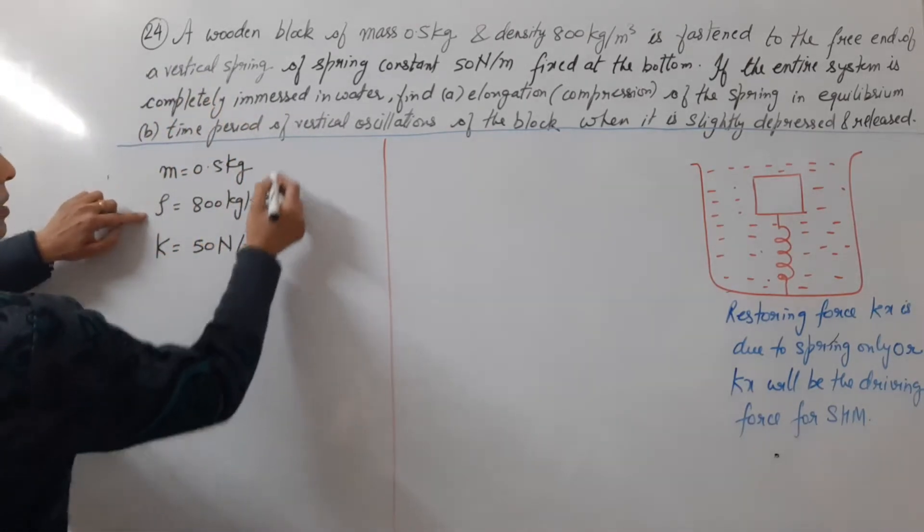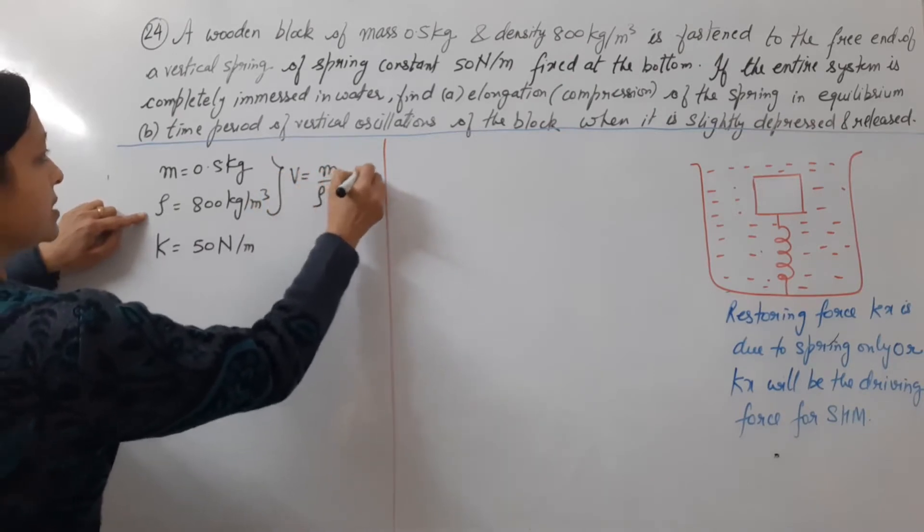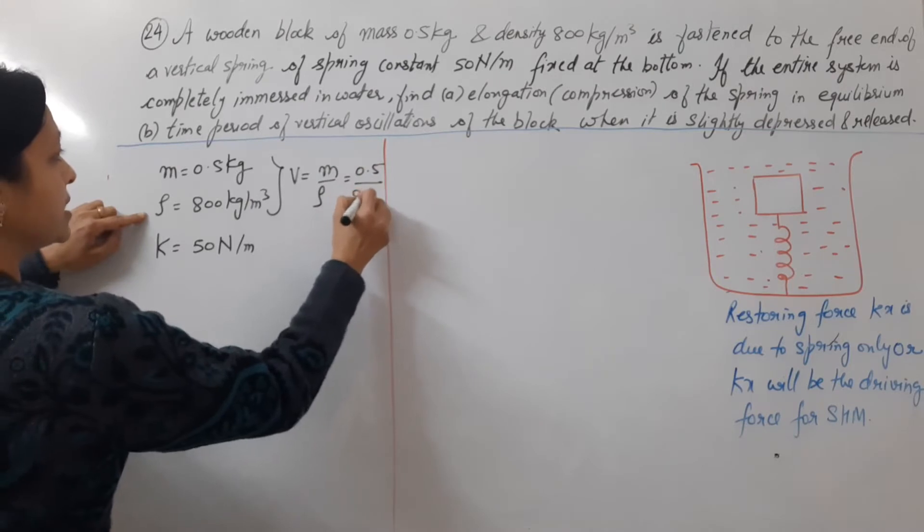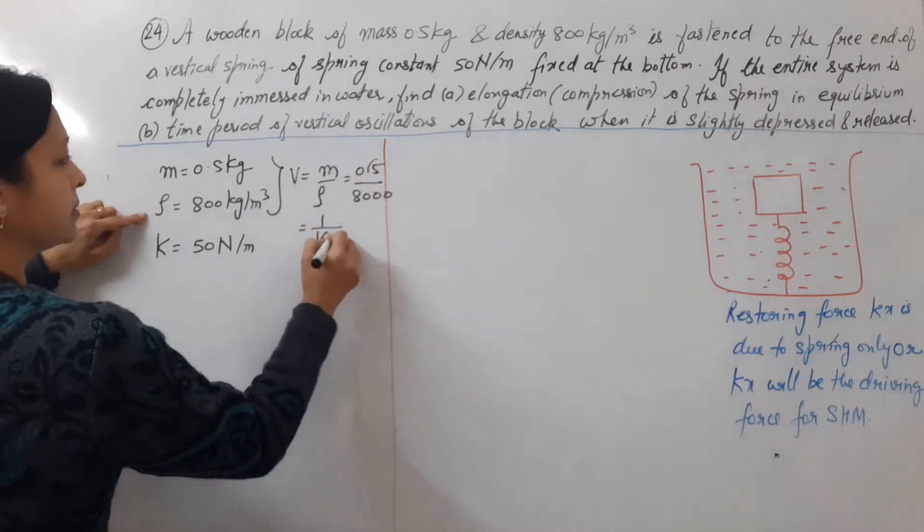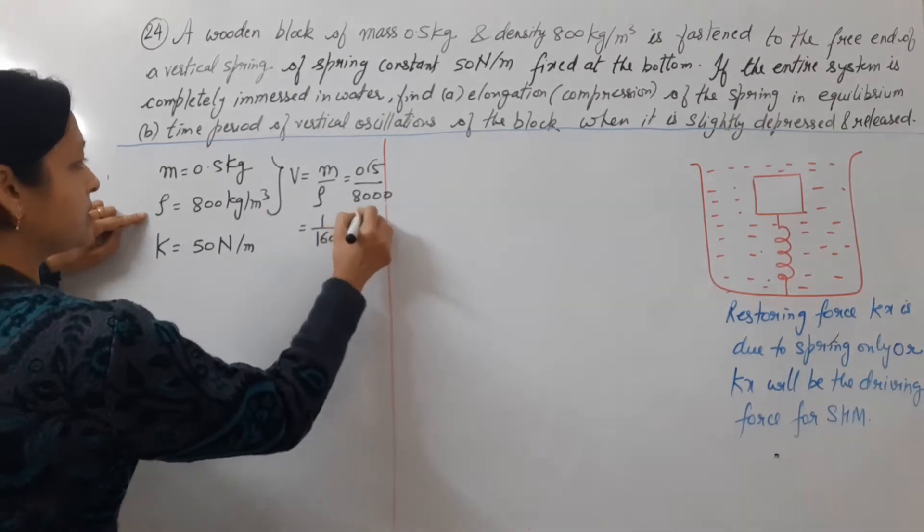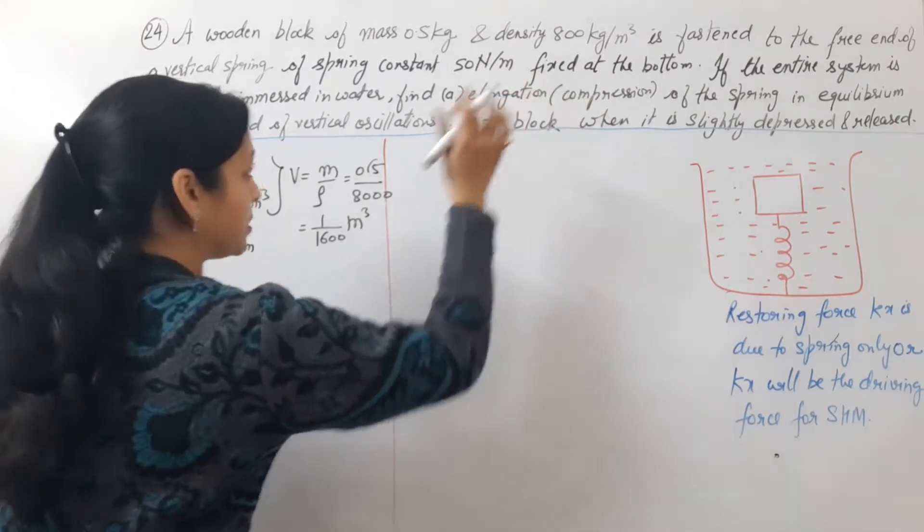First, mass and density is volume. Volume is mass upon density. Mass is 0.5 and density is 800. So we will cancel. Volume is 1 by 1600 meter cube.